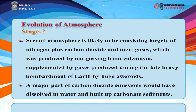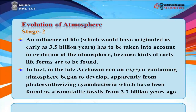Stage 2. The second atmosphere likely consisted largely of nitrogen, carbon dioxide, and inert gases, produced by outgassing from volcanism, supplemented by gases produced during the late heavy bombardment of Earth by huge asteroids. A major part of carbon dioxide would have dissolved in water and built up carbonate sediments. Life originating as early as 3.5 billion years ago has to be taken into account, as in the late Archean Eon, an oxygen-containing atmosphere began to develop from photosynthesizing cyanobacteria, found as stromatolite fossils from 2.7 billion years ago.